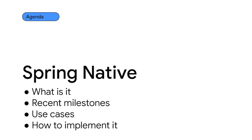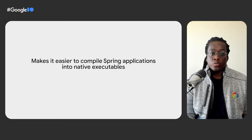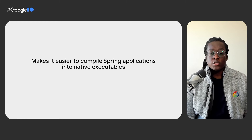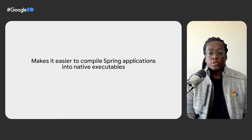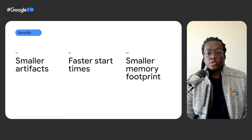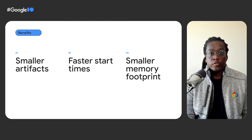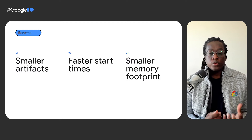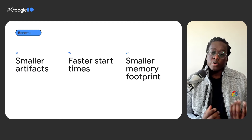In today's workshop, we'll be focusing on the Spring Native project. We'll start by explaining what it is and talking about some of its recent milestones. After that, we'll go over some good use cases for Spring Native apps. And finally, we'll work through implementing it together. Simply put, Spring Native is a project to make it easier for developers to compile their Spring applications into native executables. Running your applications as native executables rather than on the JVM means smaller artifacts, faster startup times, and lower memory usage, all of which allows you to get more work done with the resources that you already have.